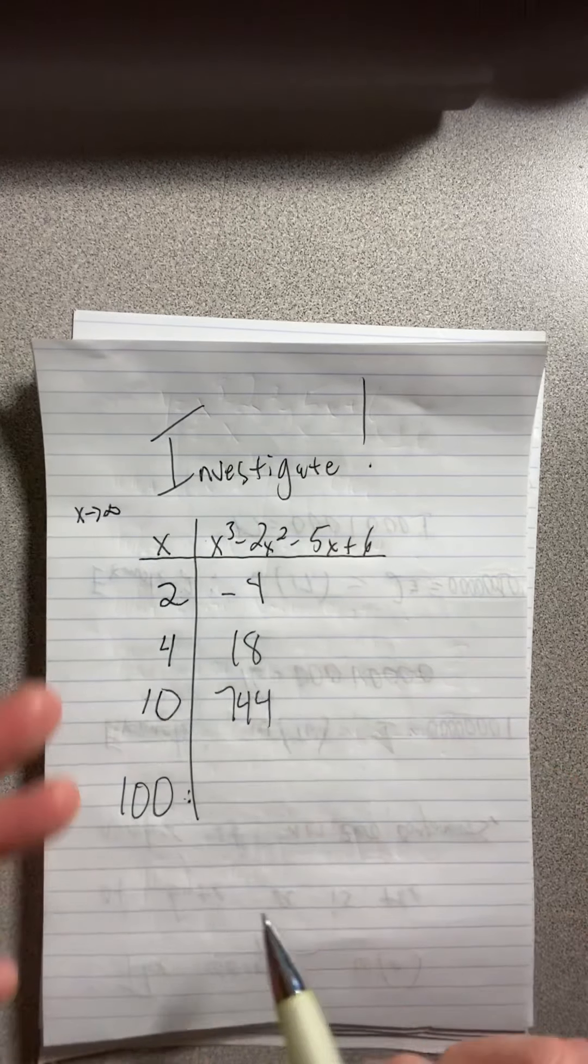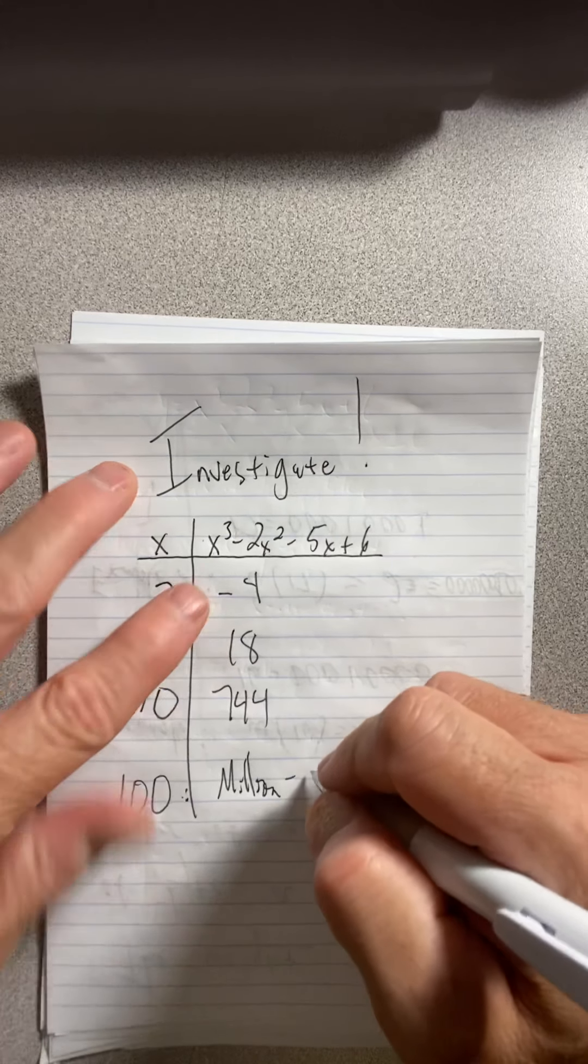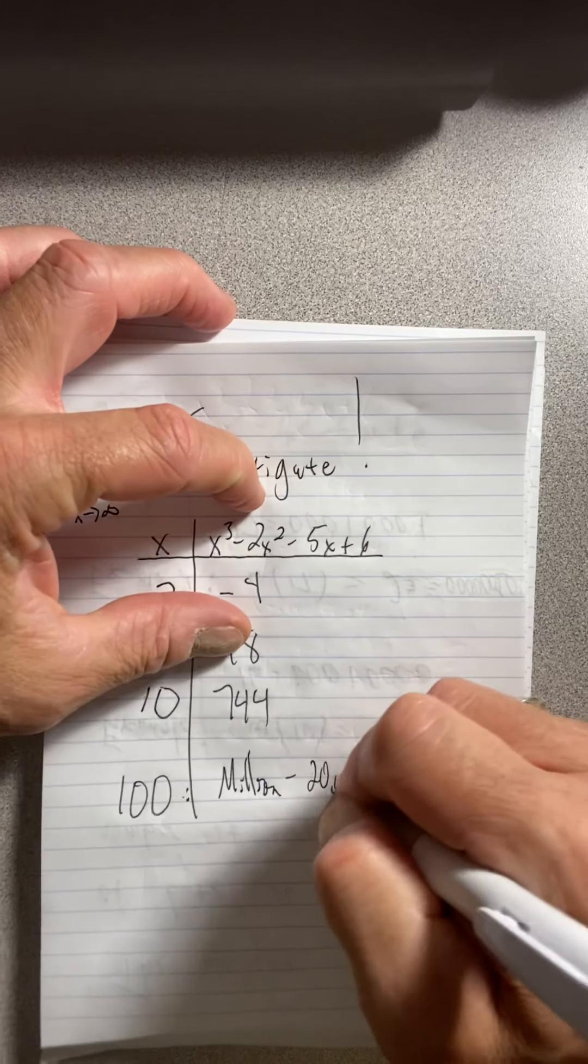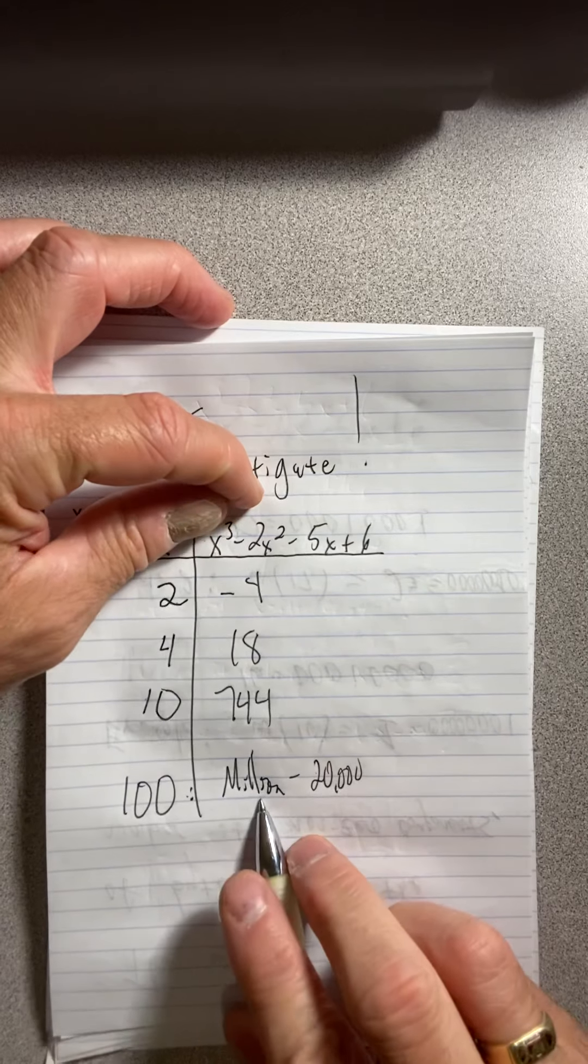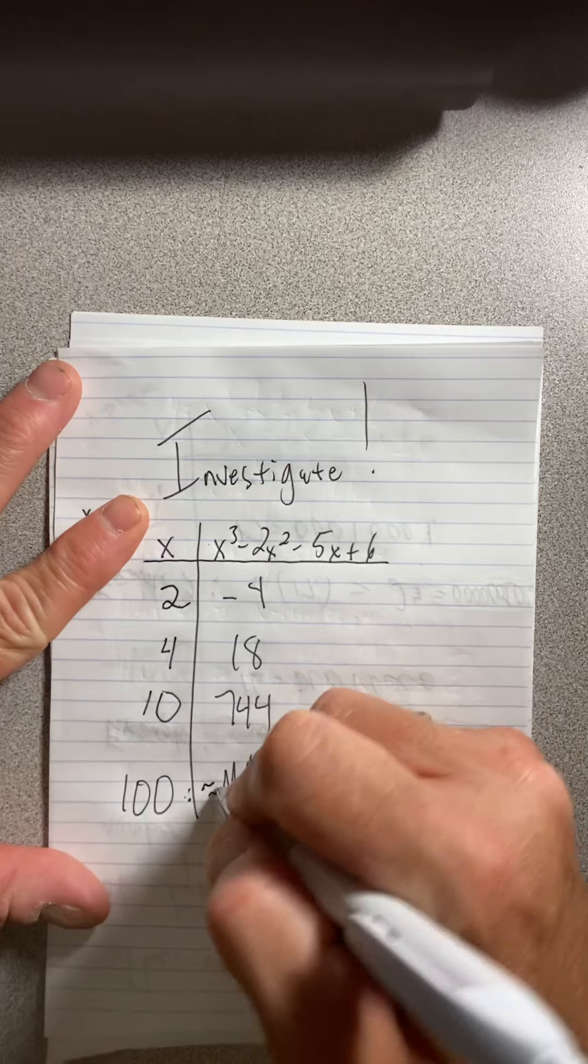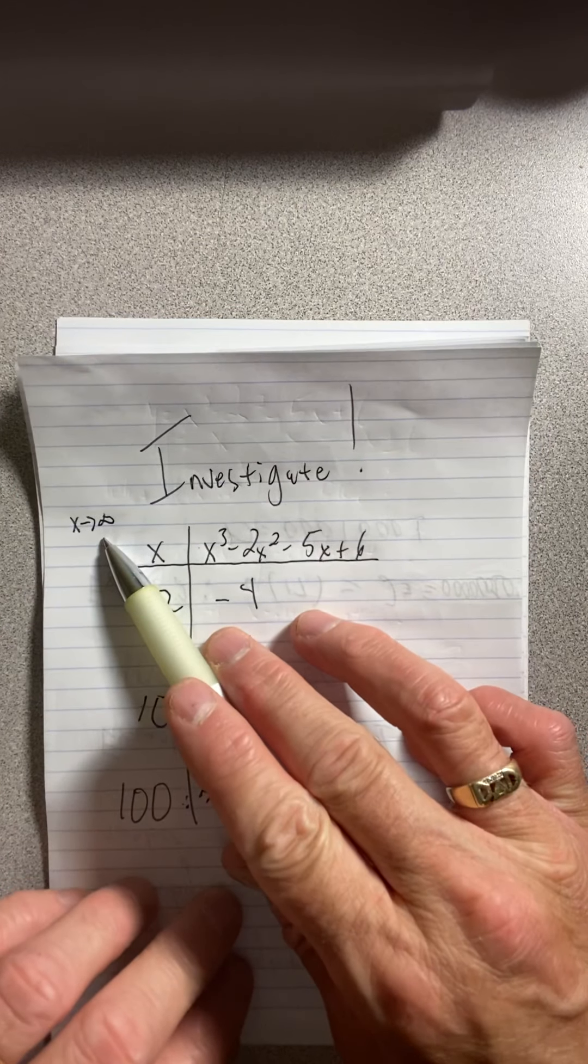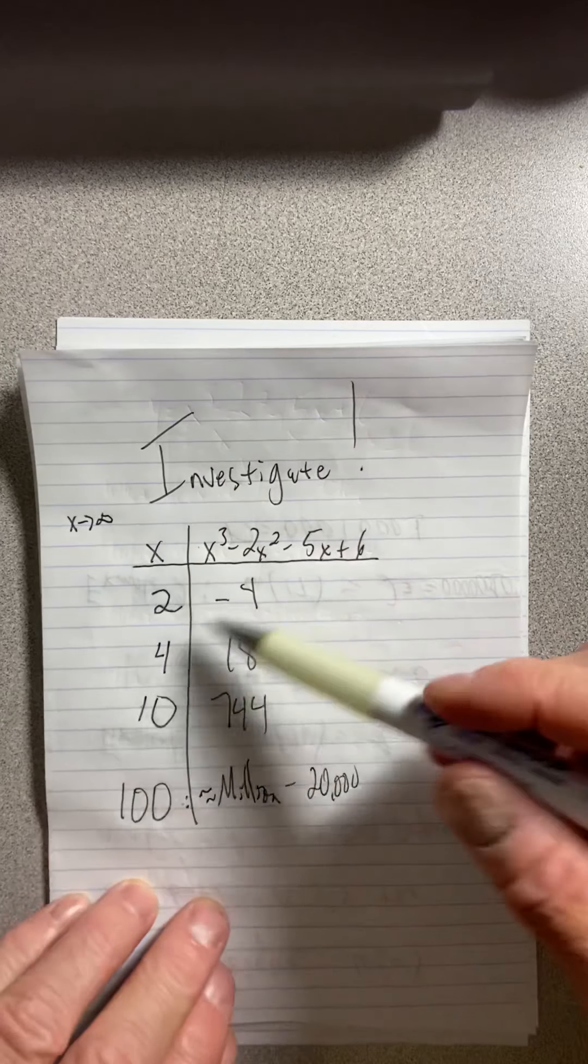What if I put in 100? Well, 100 cubed is in the millions, but if you square 100, you're only in the 10,000s. When you start taking away, you have a million, and you take away a measly 20,000. You're still near the millions. So what? I take off another 500 and a 6. So we're basically in the millions.